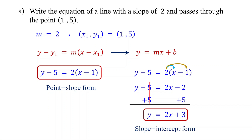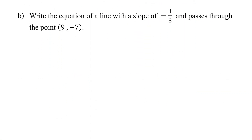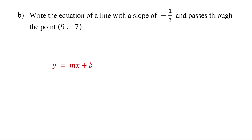You can also directly write the slope-intercept form without starting with the point-slope form. In slope-intercept form, m represents the slope and b represents the y-intercept. The slope is given, which is negative 1 third. The y-intercept is not given, but we can find it using the given slope and point.